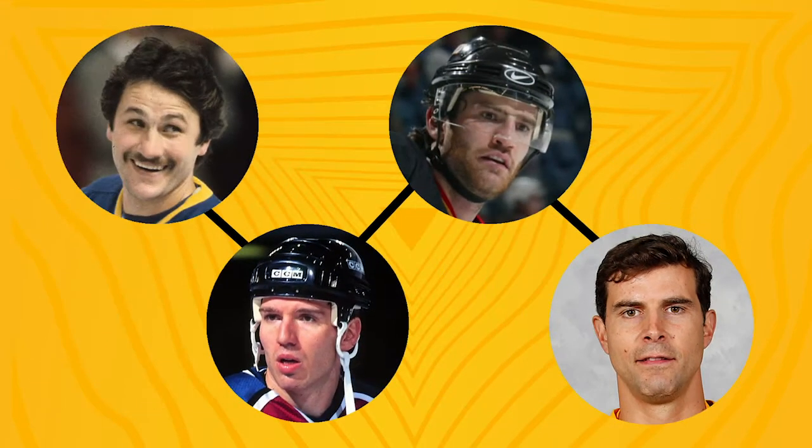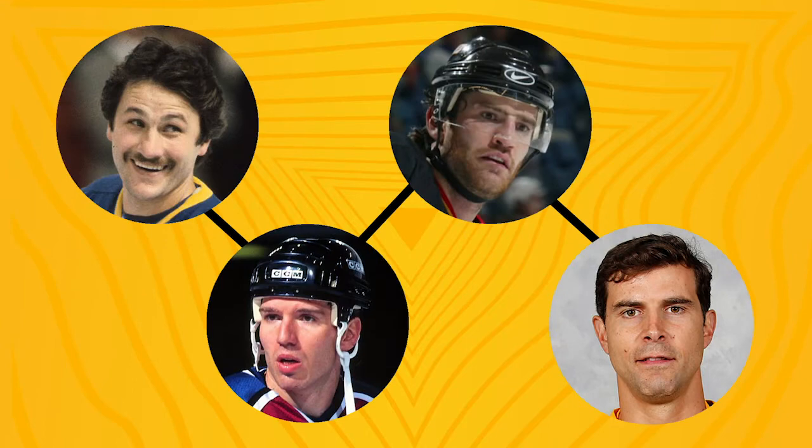Only three degrees of separation to get from Buffalo's Wheel of Fortune prize Gilbert Perrault to the great Tom Kostopoulos. We started with Hall of Famer and French Connection catalyst Perrault, who briefly served as mentor and teammate to a young Uwe Krupp, who made history winning the Stanley Cup with the sturdy Stefan Yelle, who played with Tom Kostopoulos in Carolina. That went so much quicker than our first video that we should try again.